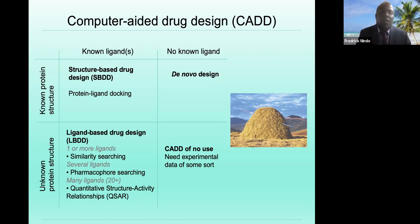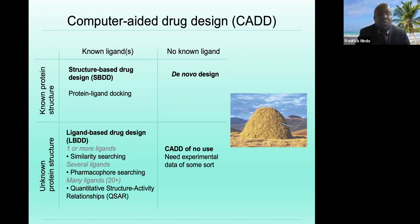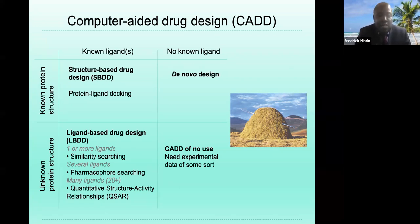Those in biochemistry will understand what a ligand is. It may be a protein or just a chemical — made in such a way that it has high affinity to bind on a particular site. If you have a known ligand, you will pursue a path called structure-based drug design, and you will do what we call protein-ligand docking.